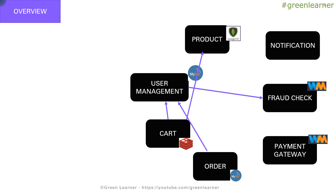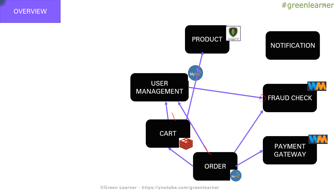So this is how it is going to work: user management, cart, and order are here. User management creation is going to take the benefit from the fraud check while creating the user. The order service is going to take the information about the cart from the cart service, and before doing the final payment, the fraud check is going to happen with the interaction of the order service with the fraud check service. All of these are synchronous communications.